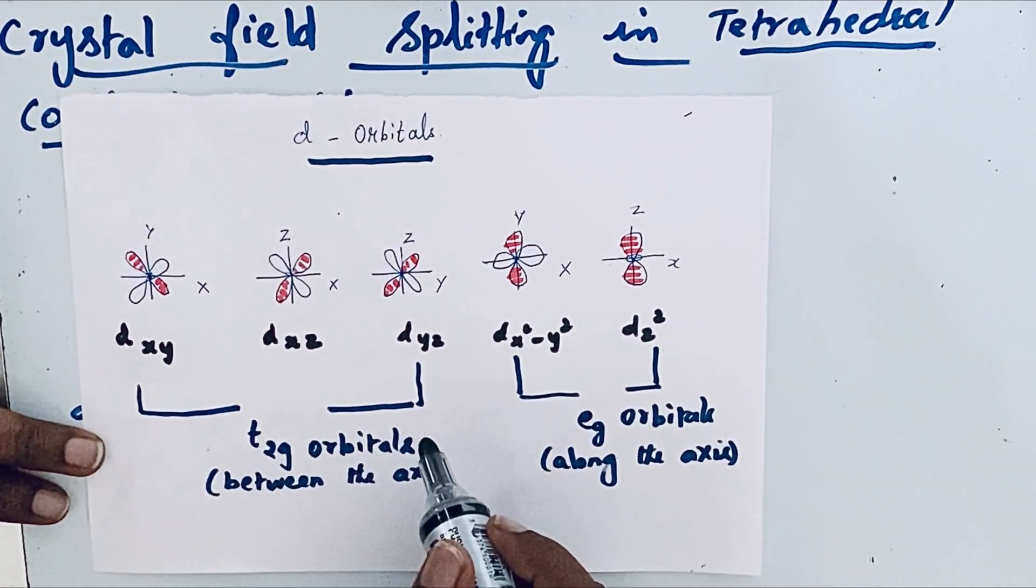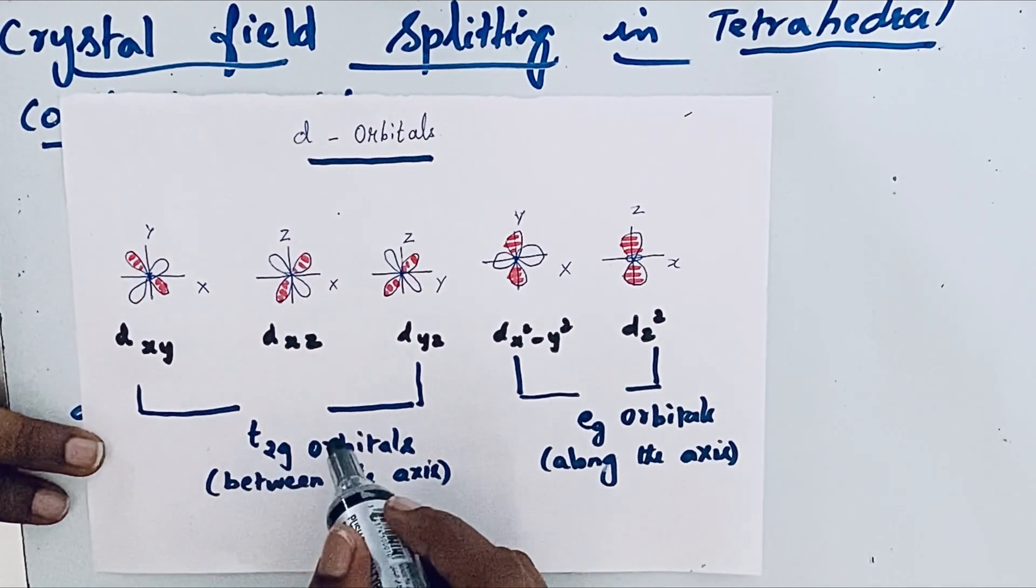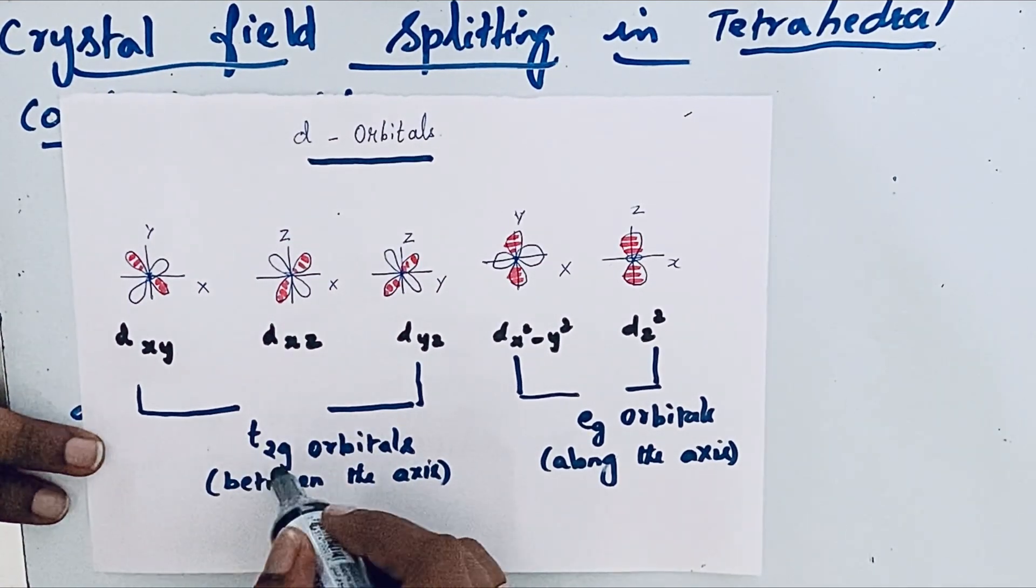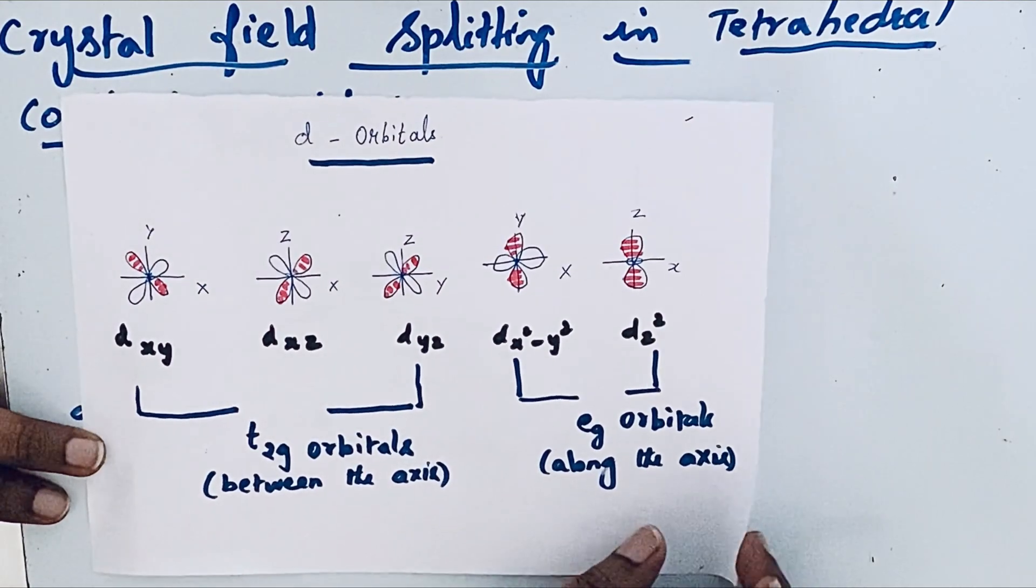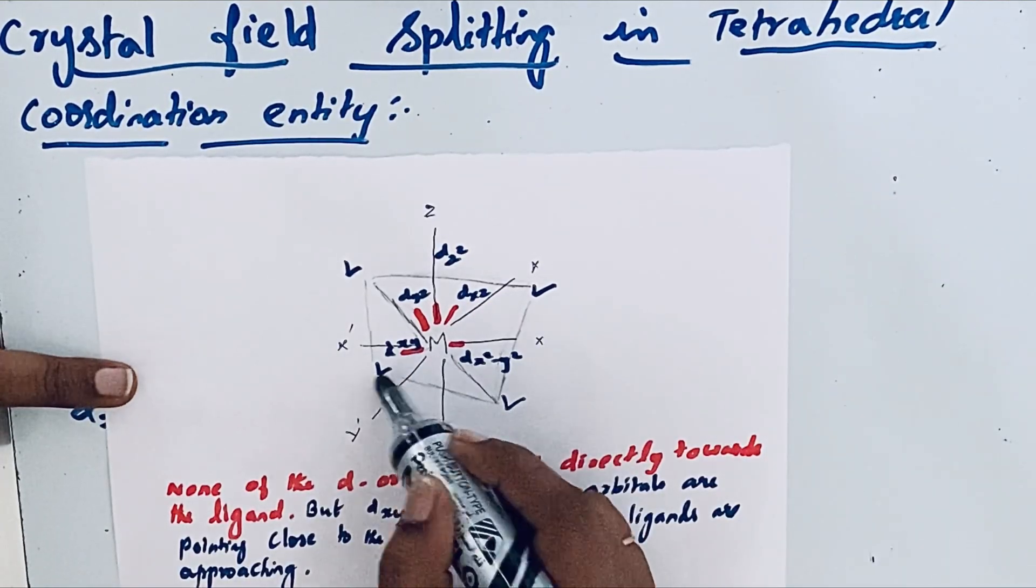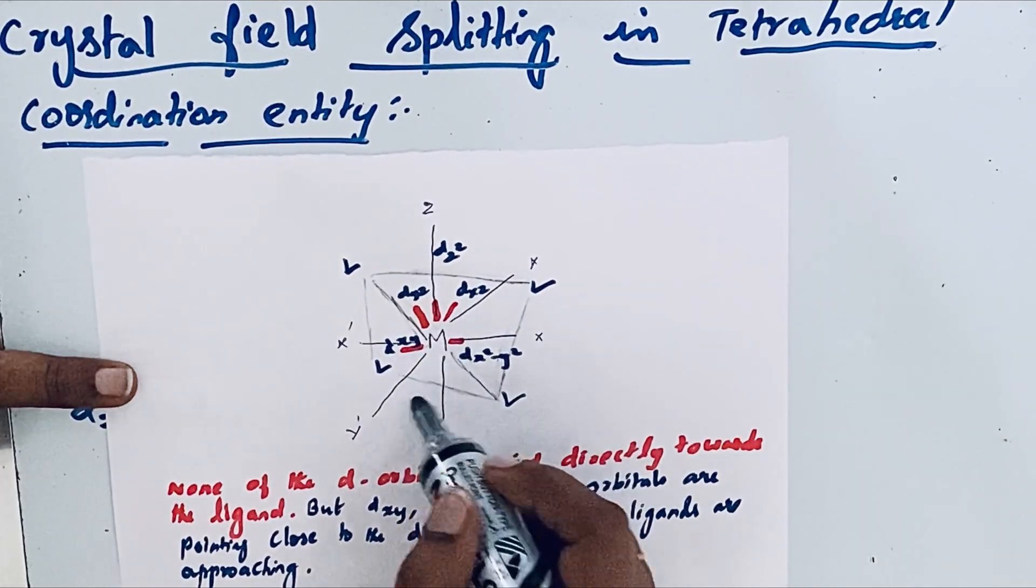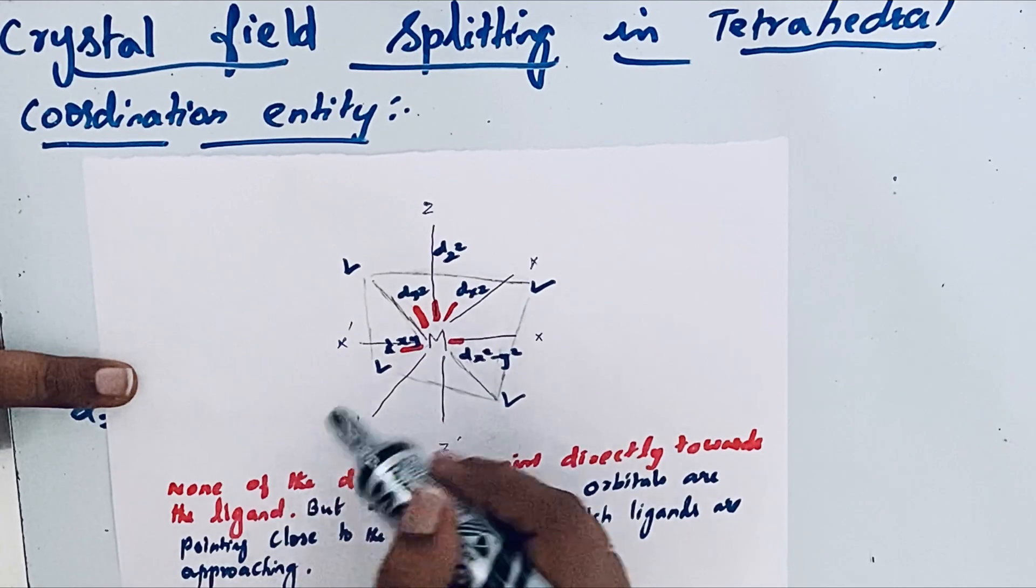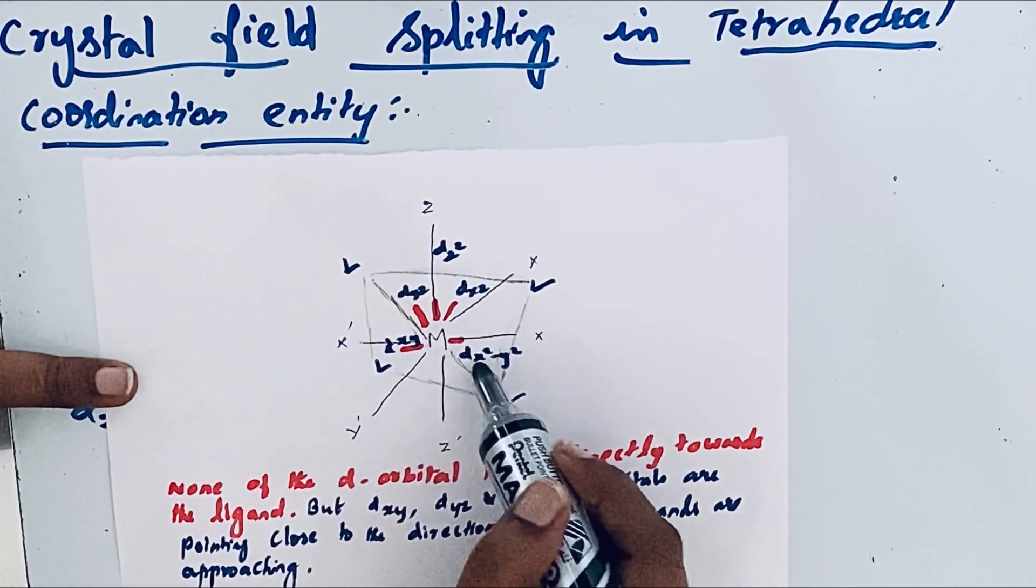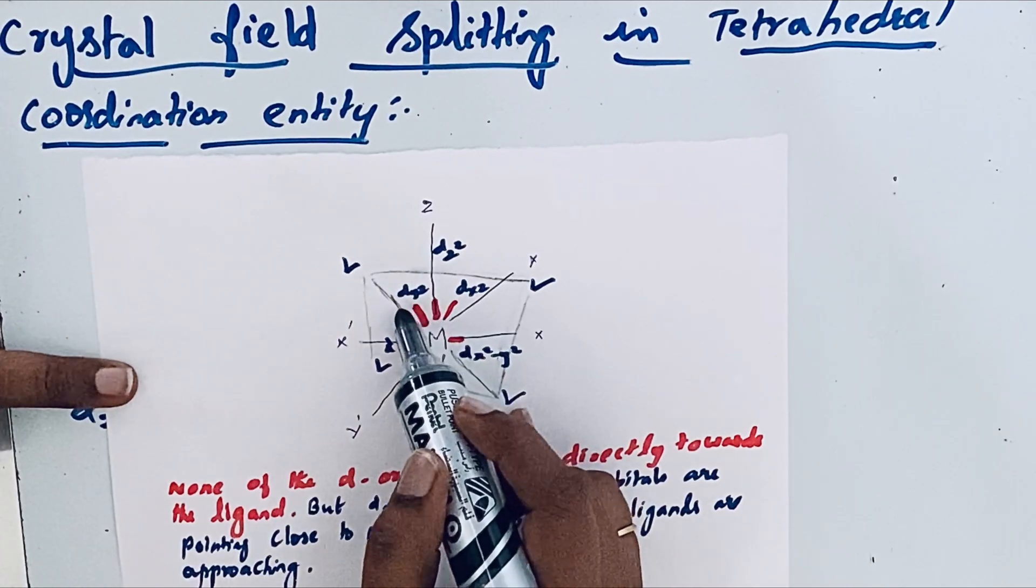So we're going to use for tetrahedral coordination entity t2 orbitals and e orbitals. You can see here that there are four ligands: one, two, three, four ligands. None of the d orbital point directly towards the ligand, dx squared minus y squared, then here dx squared. Then here you can see that between the axis.